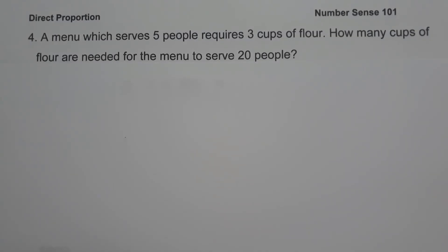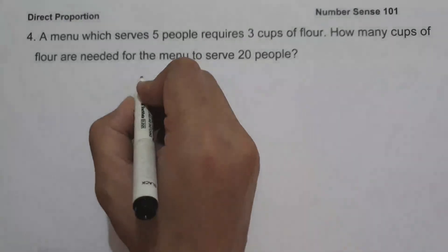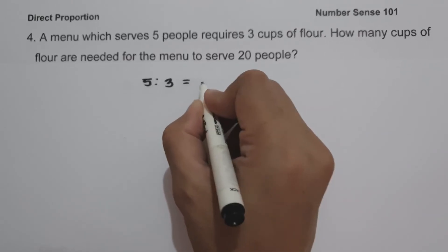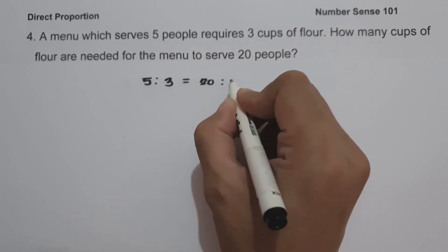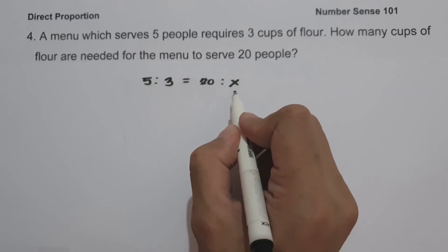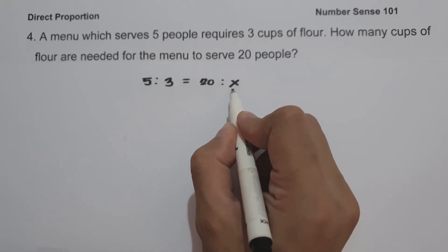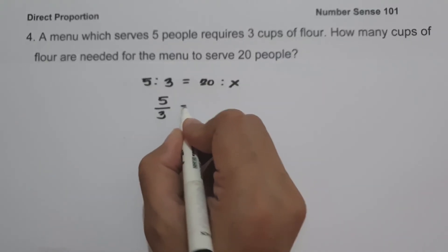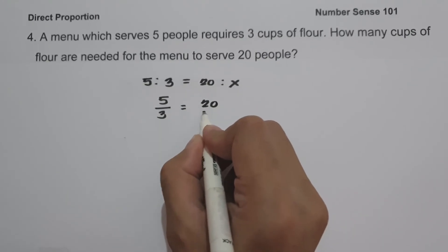On our last example, a menu which serves 5 people requires 3 cups of flour. How many cups of flour are needed for the menu to serve 20 people? To determine the number of cups of flour needed for the menu to serve 20 people, let us write the given ratios as 5 people is to 3 cups of flour equals 20 people is to X — that is the number of cups of flour needed to serve 20 people. So let us write this one as 5 over 3 equals 20 over X.